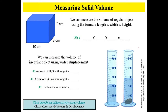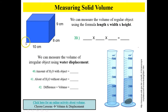When you measure solid volume, you use a different technique. You can measure solid volume with a ruler if your object is square and has nice straight sides. To do that, you take length times width times height. So for number 39, what is the volume of this cube? Length times width times height.